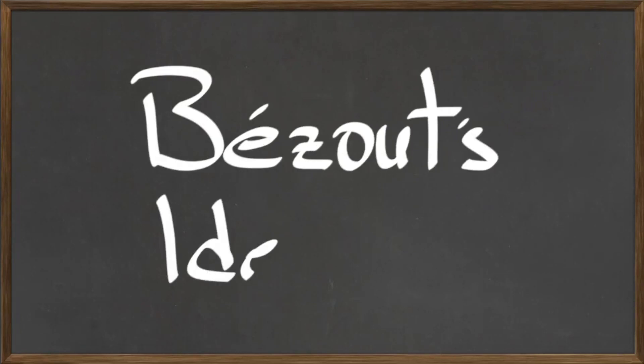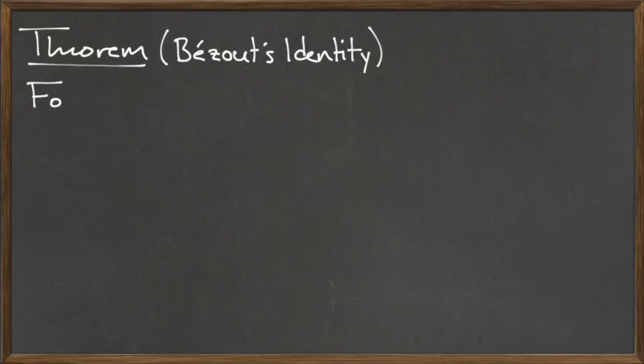In this video, we will discuss Bézout's identity. Bézout's identity is a direct consequence of the Euclidean algorithm.